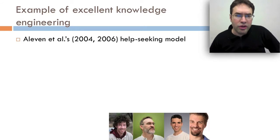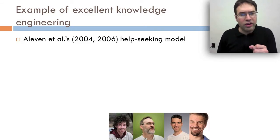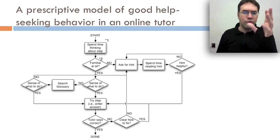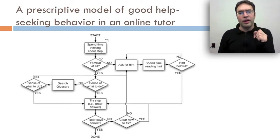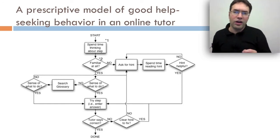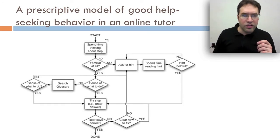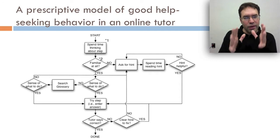I'd like to give an example of some really excellent knowledge engineering, and that's Vincent Aleven and colleagues' model of help-seeking. Aleven's model is prescriptive and it's a model of how students should seek help in an online tutor, specifically the cognitive tutoring system. In this system, the student is first supposed to spend time thinking about the step.